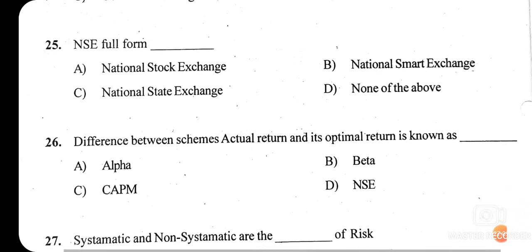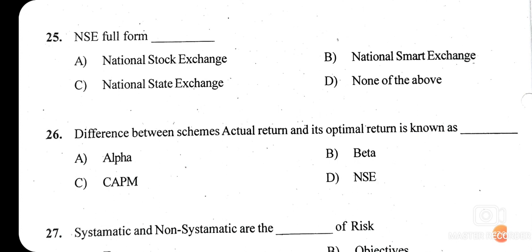Question twenty-six: the difference between a scheme's actual return and its optimal return is known as what — alpha, beta, CAPM, or NSE? The right answer is alpha. The difference between the scheme's actual return and its optimal return is known as alpha.